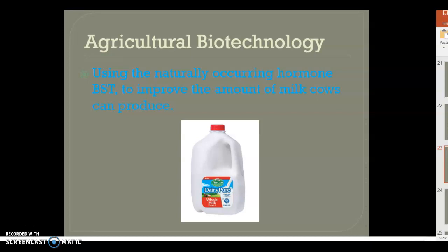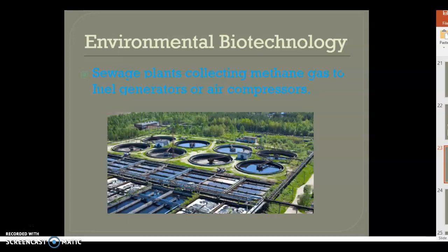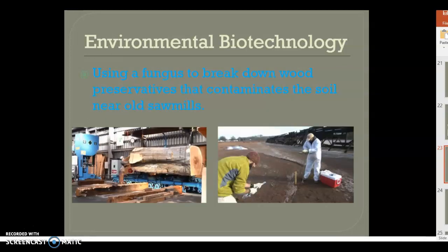Using methane-producing bacteria to heat homes in third world countries — they use animal waste, which contains methane, run it to a generator, and that generator turns it into heat for the house. Sewage plants are also collecting methane gas to fuel generators or air compressors. We're seeing more of this, including a place in New Bern that takes turkey litter and converts it to gas as an energy source. Environmental biotechnology is all about improving the environment.